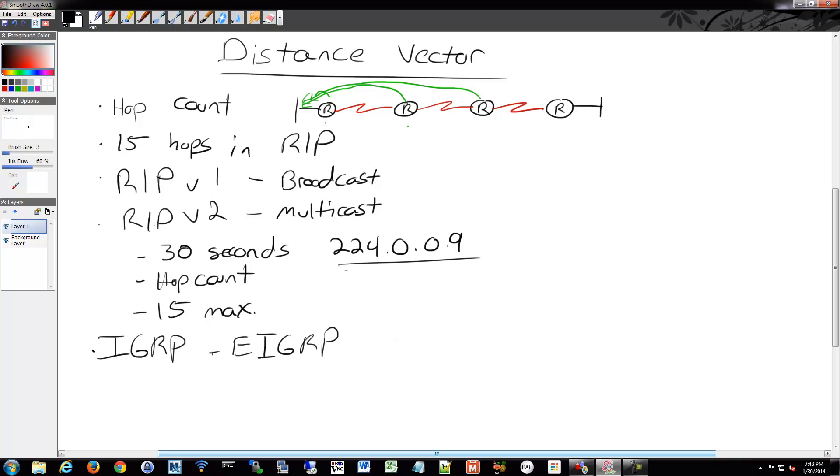Those use the Diffusing Update Algorithm. So that's DUAL. That's something that's touted by Cisco as a very nice algorithm that they use to determine the paths to take and to have backup paths ready at any one time. The dual algorithm does that for you.